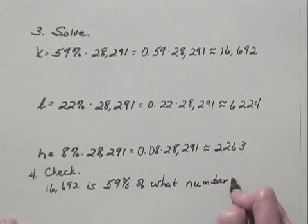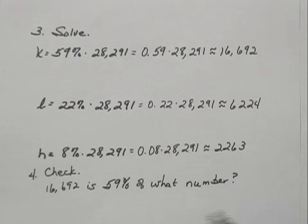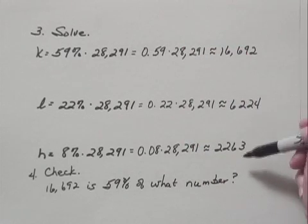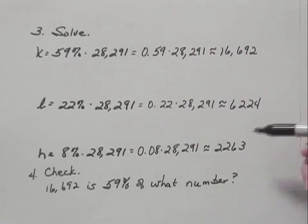And if we solved this equation, the number that we should get is this number, 28,291. We could also do that with the other two results that we got. And when we do either of these processes, we do find that the answer checks.